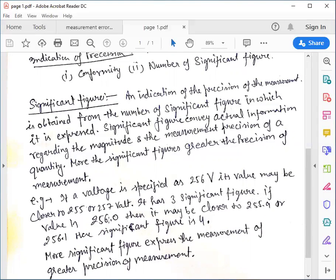If we have 256.0 V, then it may be close to 255.9 or 256.1. Here significant figure is 4, which means the second reading is more precise than first.